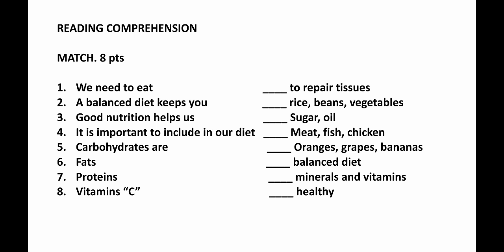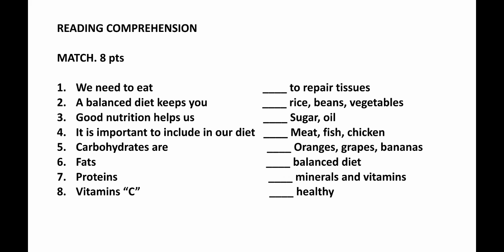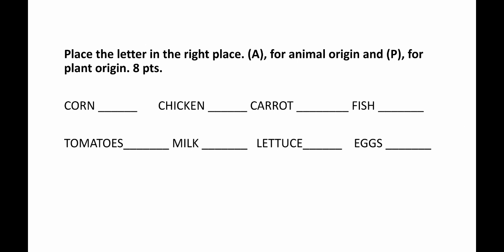Here you have your reading comprehension activity. You have a matching activity that has a relation with the text — the text gives you the answers to solve the match. You also have a list of different foods, and you have to identify the origin of each food.